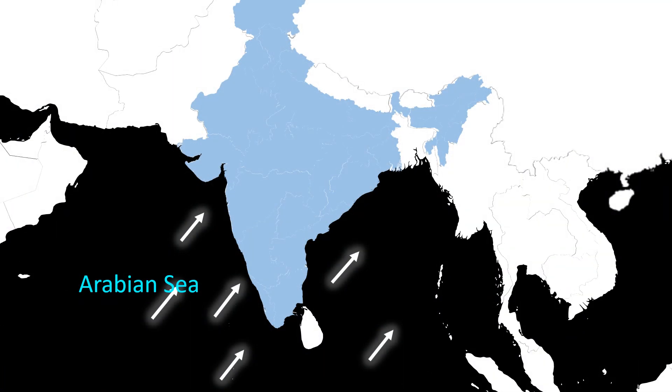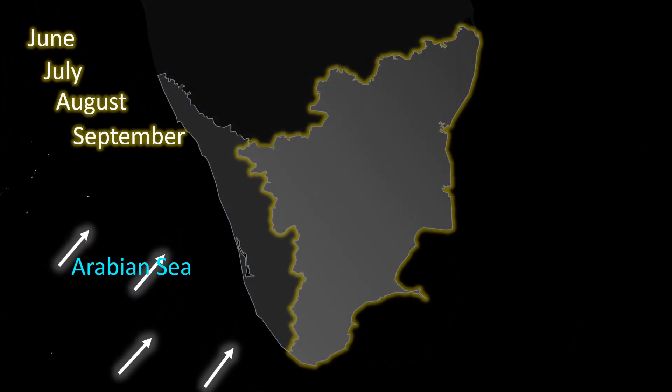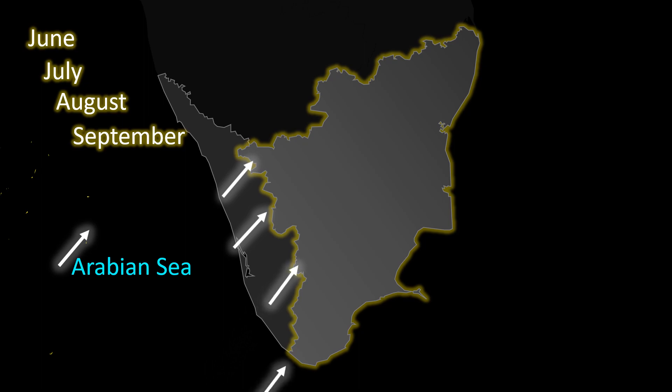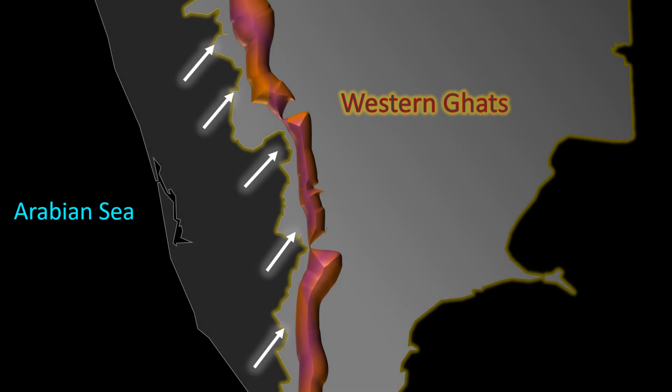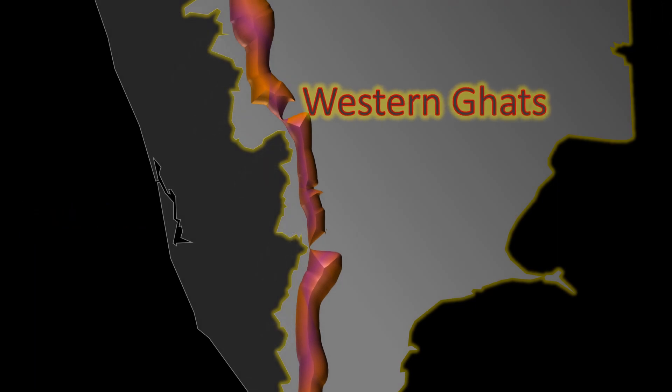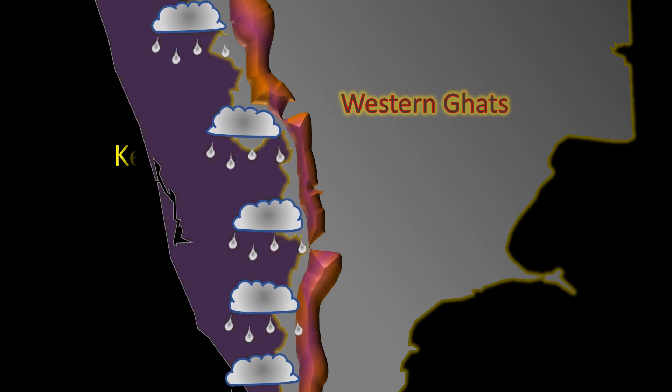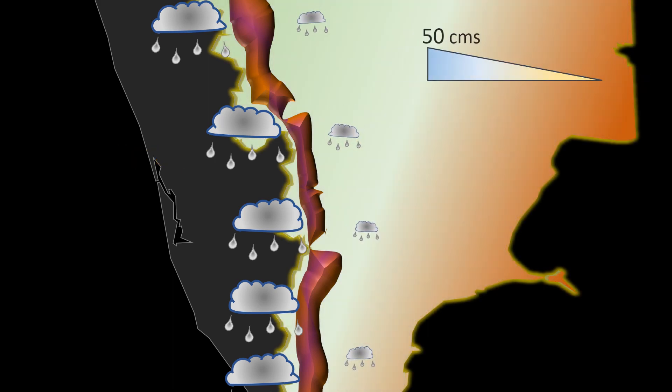The south-west monsoons, laden with moisture from the Arabian Sea, blow across Kerala and reach Tamil Nadu around the beginning of June. Sadly for Tamil Nadu, the Western Ghats, which form the western edge of Tamil Nadu, block those winds. As a result, Kerala receives most of the rains and Tamil Nadu doesn't benefit much from these winds.